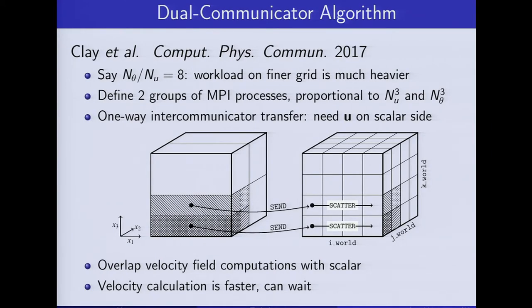The velocity information has to go from one communicator to another — essentially a one-way inter-communicator transfer. One of the ideas that comes from this is that some operations carried out by the velocity MPI group and the scalar group can overlap — they can essentially be done at the same time. That's the beginning of the idea of trying to make the calculation faster.